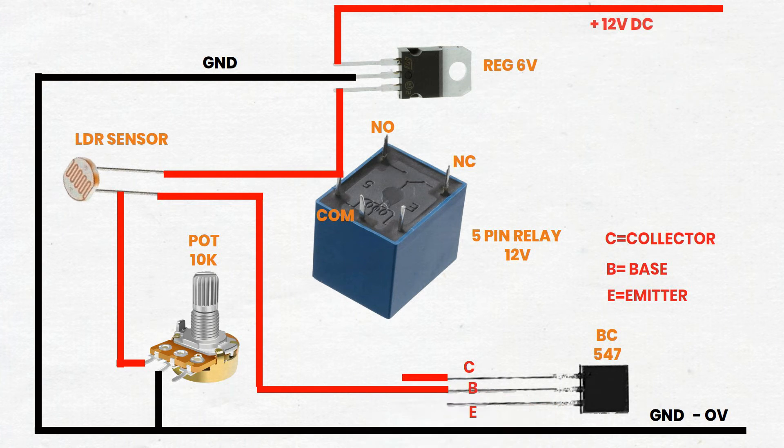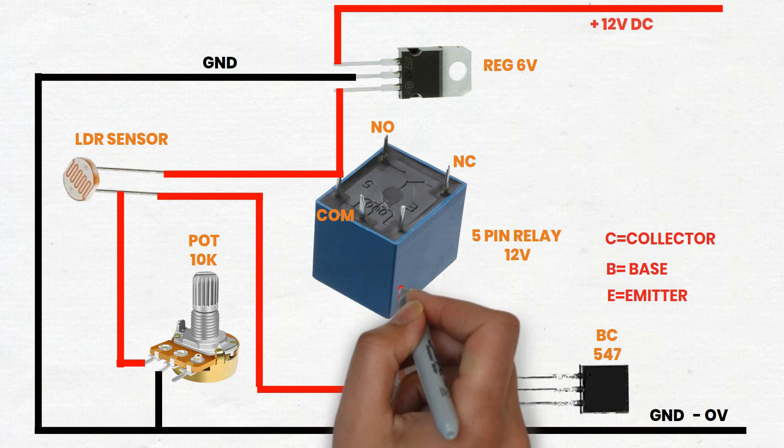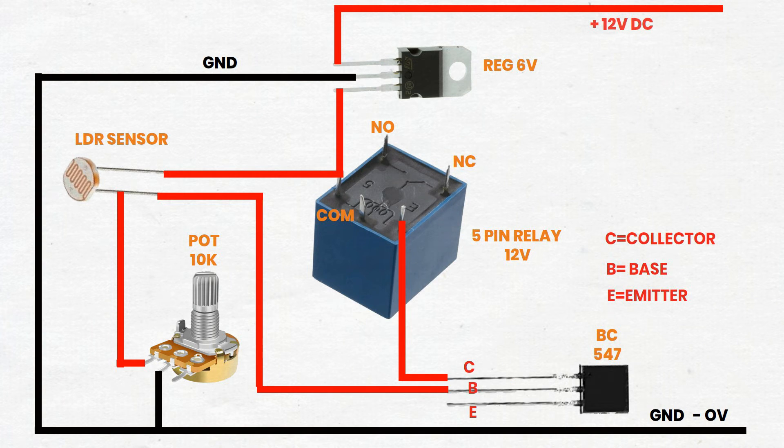Collector: Connect to one end of the relay coil. Emitter: Connect to ground.